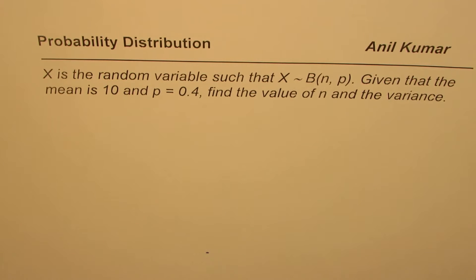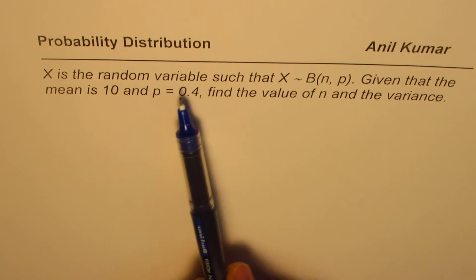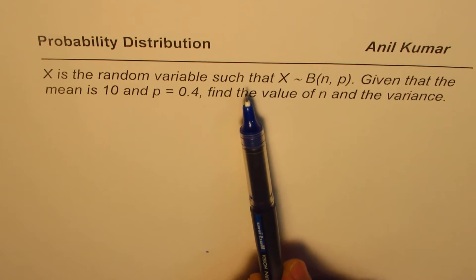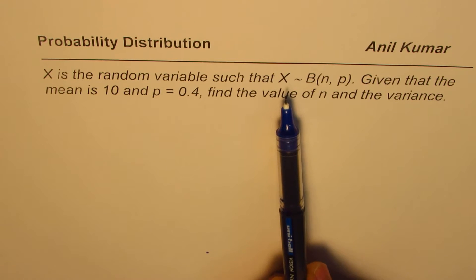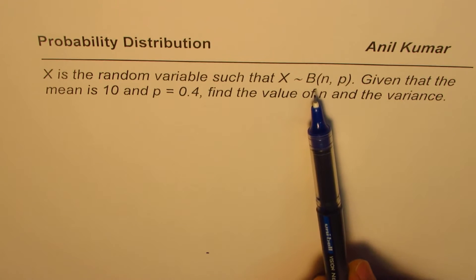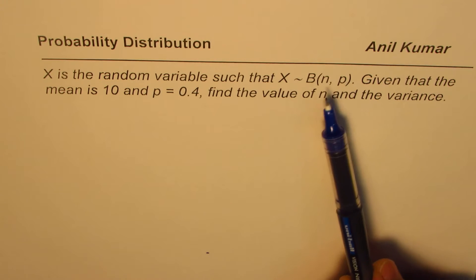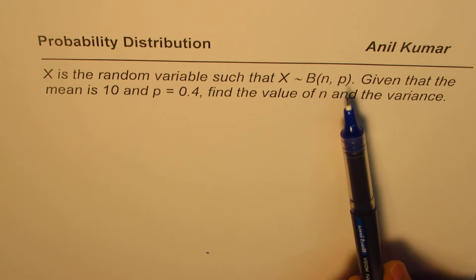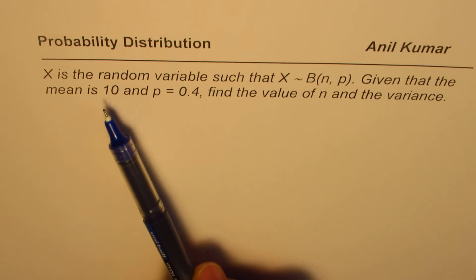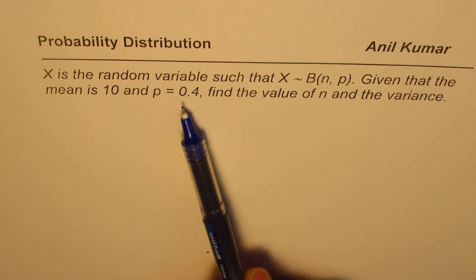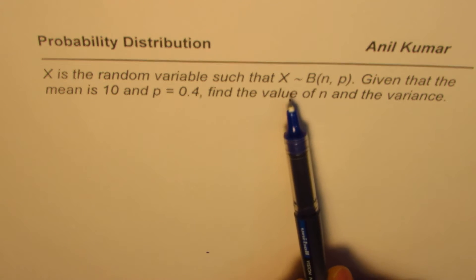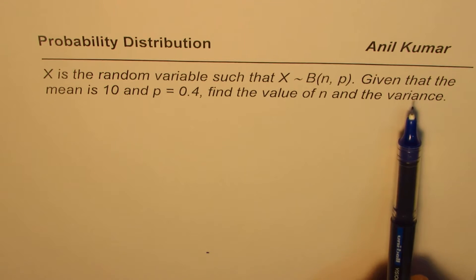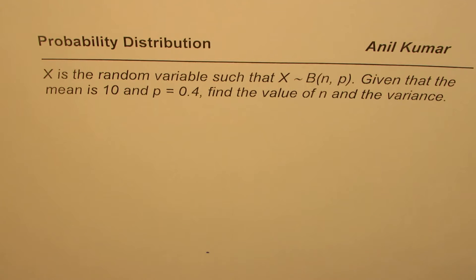Question number 7 is: X is a random variable such that X follows binomial distribution B(n, p), where n is the number of trials and p is the probability of success. Given that the mean is 10 and p equals 0.4, find the value of n and the variance. So we need to find the value of n and the variance.